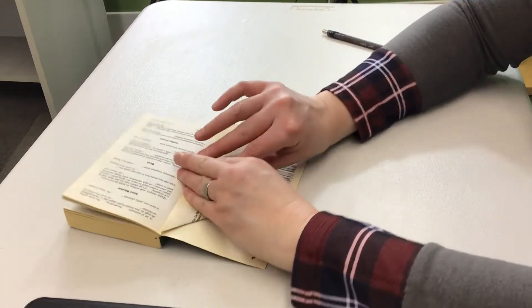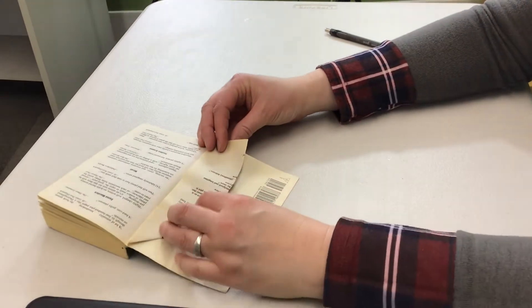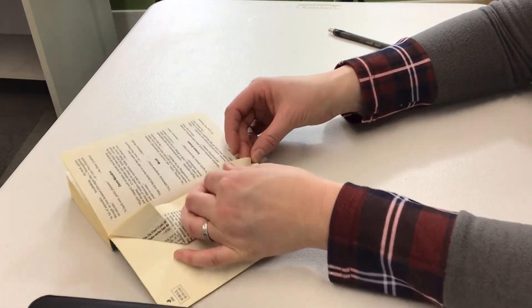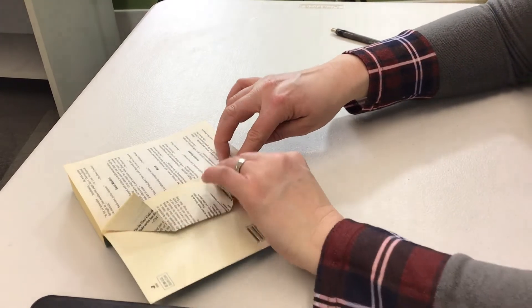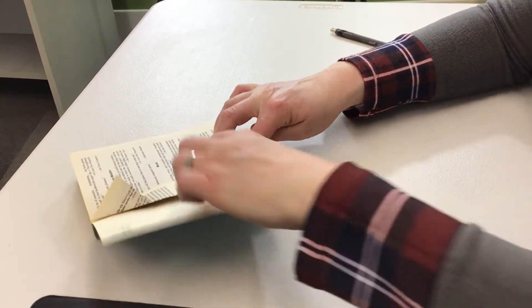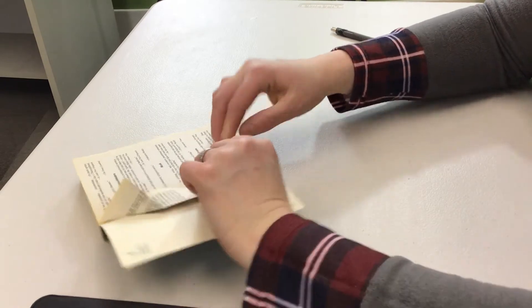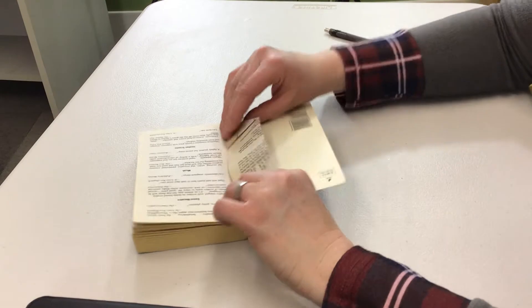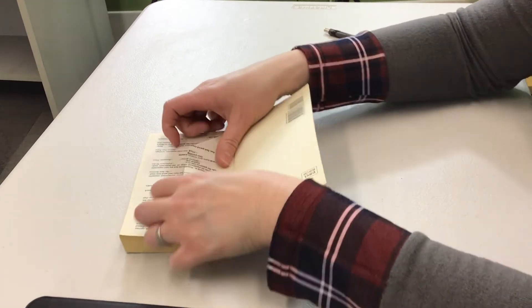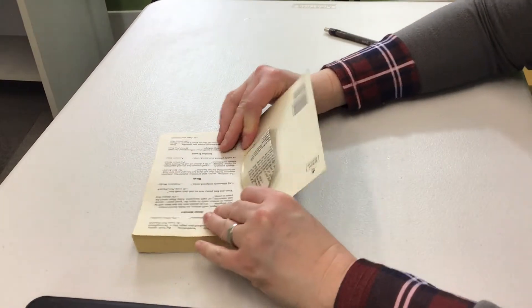And you'll do the same with the other side. So you're going to take the corner, bring it down right to the center, and you're going to nicely fold it. Make it nice and tight there. Guess what guys? You have one made.